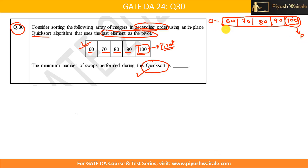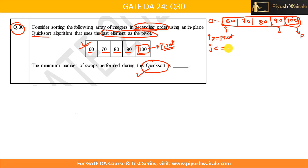We have two pointers: i, which is the left bound, and j, which is the right bound. i travels in the right direction and j moves in the left direction. i stops when it finds an element greater than or equal to the pivot value, and j stops when it finds an element less than or equal to the pivot value.